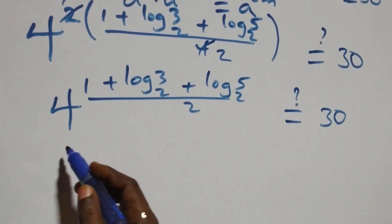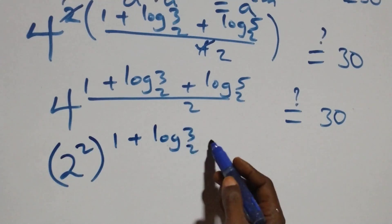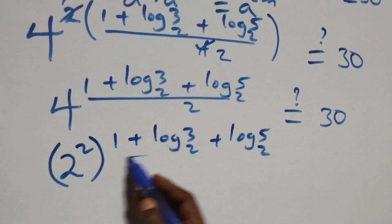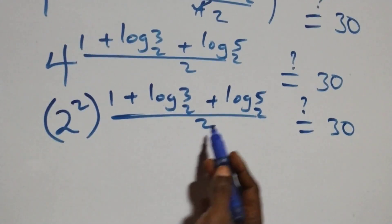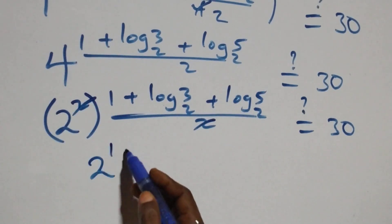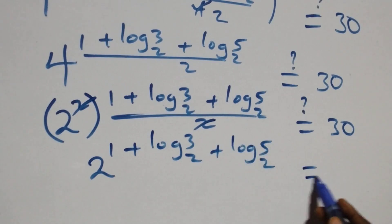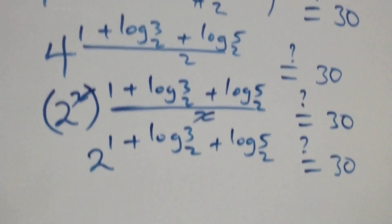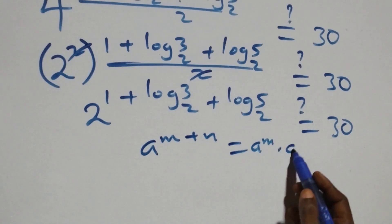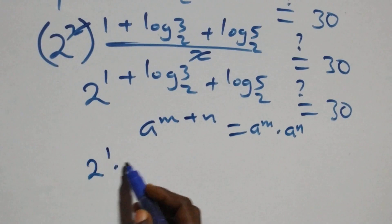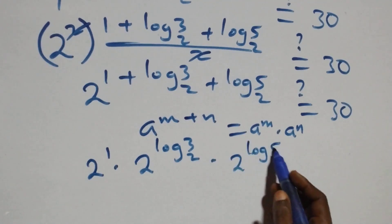Writing four as two squared and simplifying the exponent, we get two raised to power one, times two raised to power log base 2 of three, times two raised to power log base 2 of five. Since two raised to power log base 2 of k equals k, this simplifies to two times three times five, which equals thirty. So the right-hand side equals thirty.